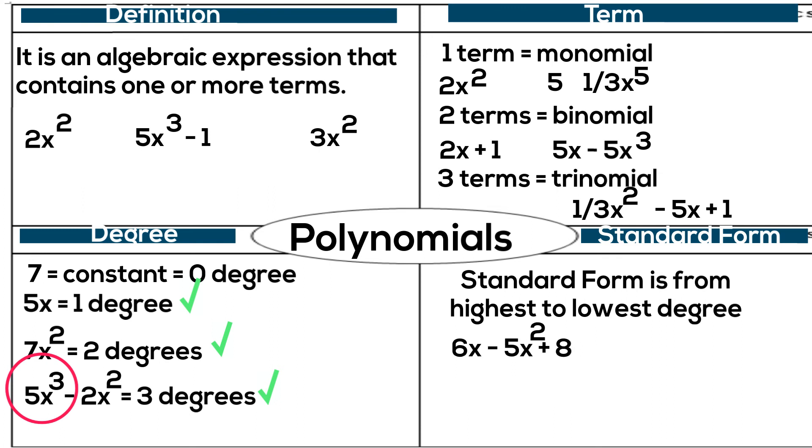Now look at 6x minus 5x squared plus 8. What would go first? Put 5x squared first, but the negative goes with it, then positive 6x, and then positive 8.